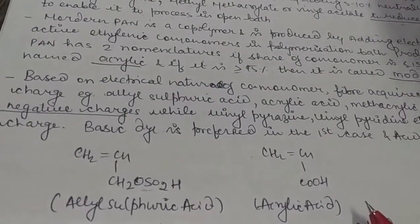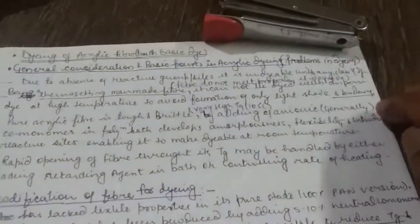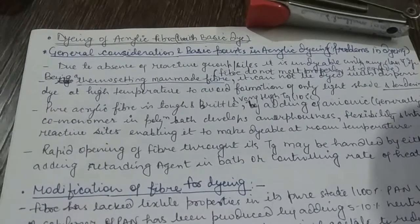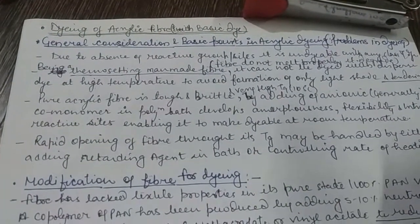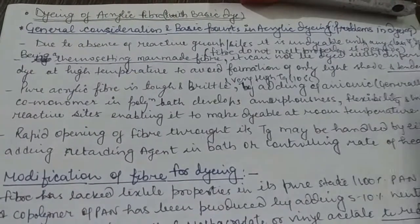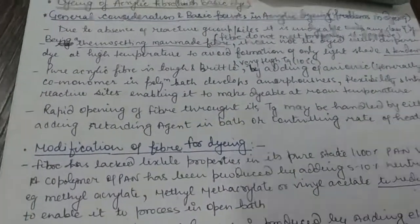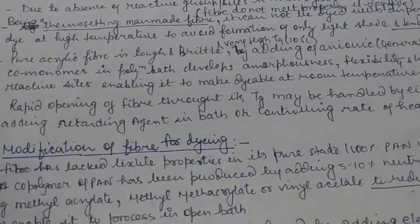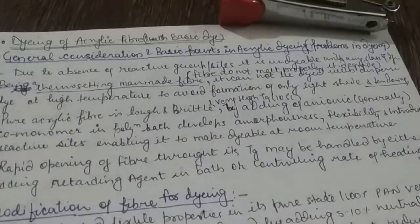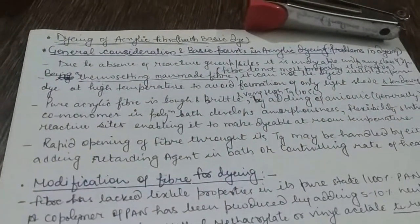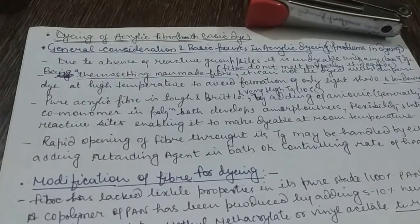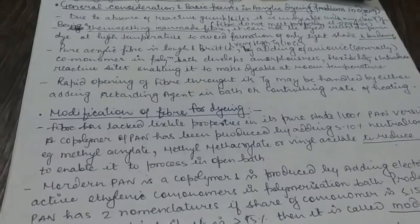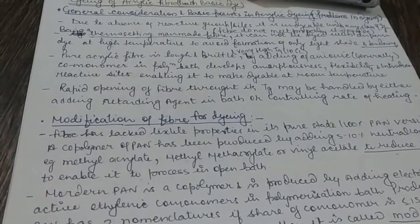In this video, we discussed the basic properties of acrylic fiber and how basic dyes are associated with acrylic fiber — or why basic dyes are most preferable in the case of acrylic fiber. We also covered the basic problems associated with dyeing acrylic fiber: the high glass transition temperature in pure polyacrylonitrile. So we reduce the glass transition temperature first to make acrylic fiber dyeable at or near boiling temperature.